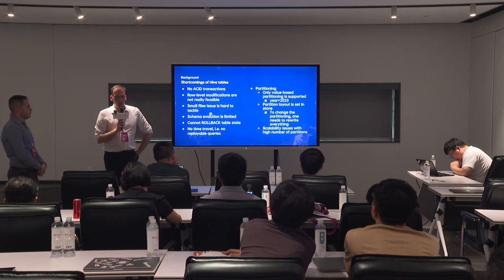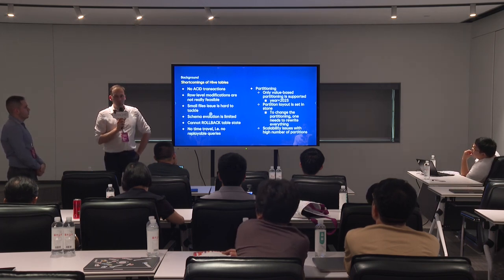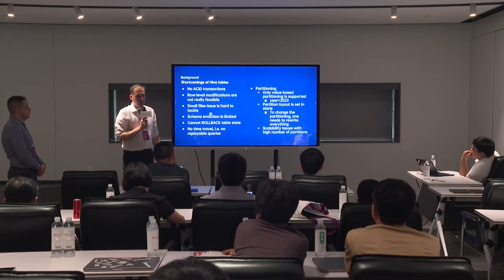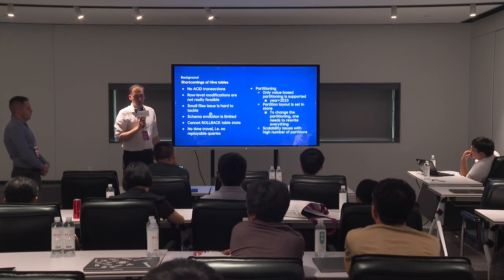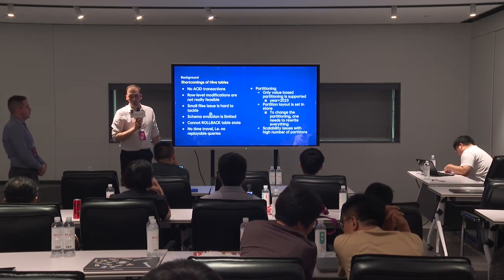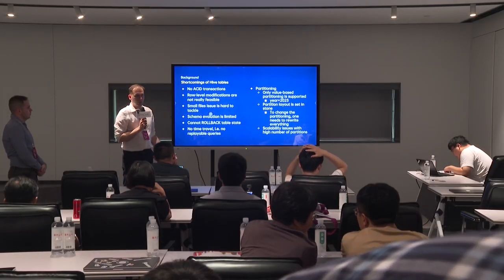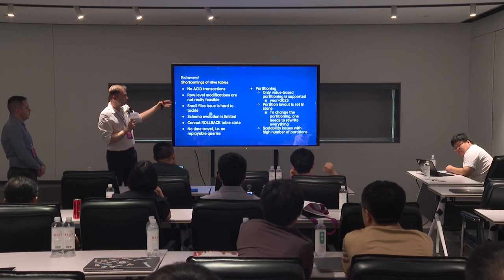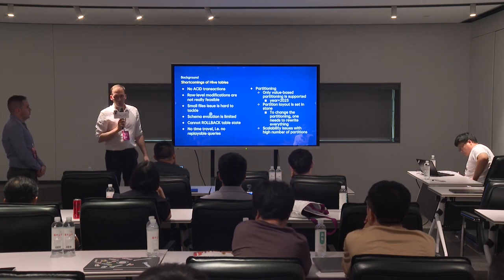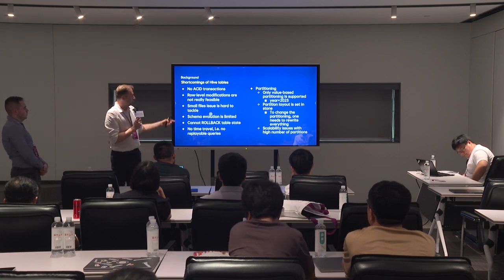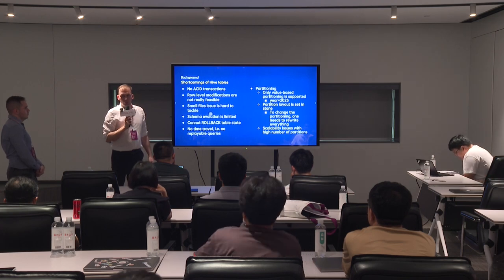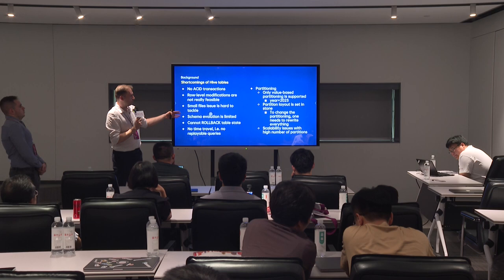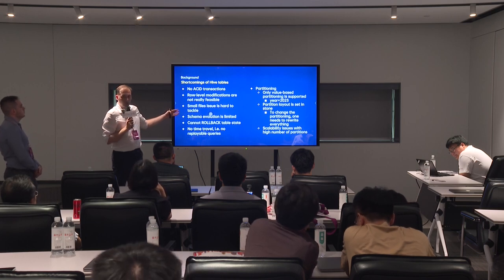The Hive table format is very simple, so interoperability is solved by its simplicity — any engine able to read or write files on the distributed storage system can interact with your table. However, there are a lot of shortcomings: no ACID transactions, row-level modifications like deletes and updates are really hard to achieve, and having too many small files can degrade read performance. This is known as the small file issue and it is hard to tackle in legacy Hive tables.